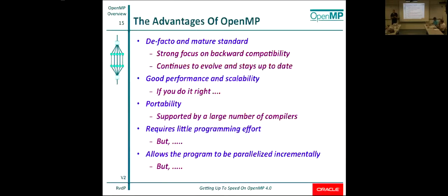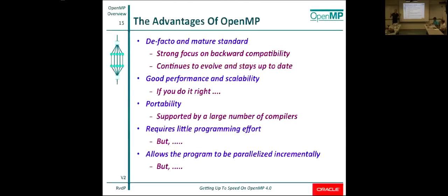Another thing is a very strong focus on backward compatibility. I'm sure you've all had experiences where things work today and tomorrow they stop working because somebody said you should fix your code. That's what the OpenMP community tries to avoid at all costs, and I think they do a very good job. It continues to evolve — the 4.1 draft specs are out, the first rumblings about 5.0 have started. You can definitely get good performance and scalability, but you've got to do it right. If you write a stupid program, you'll get stupid performance.